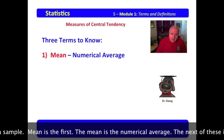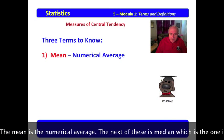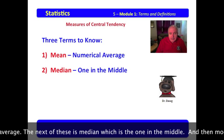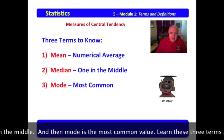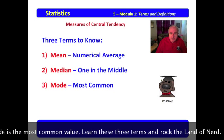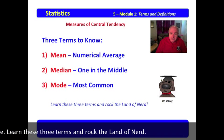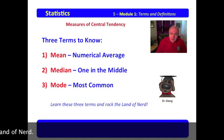Mean is the first. The mean is the numerical average. The next of these is median, which is the one in the middle. And then mode is the most common value. Learn these three terms and rock the land of nerd.